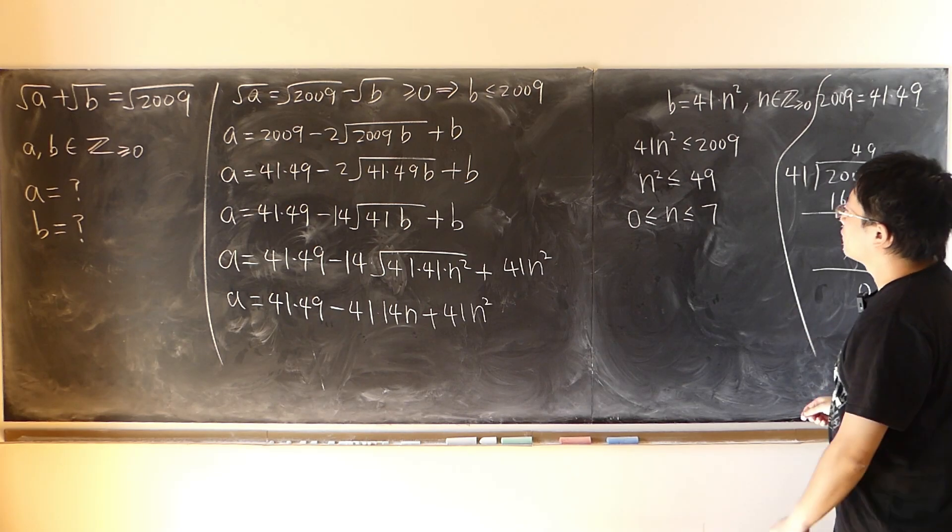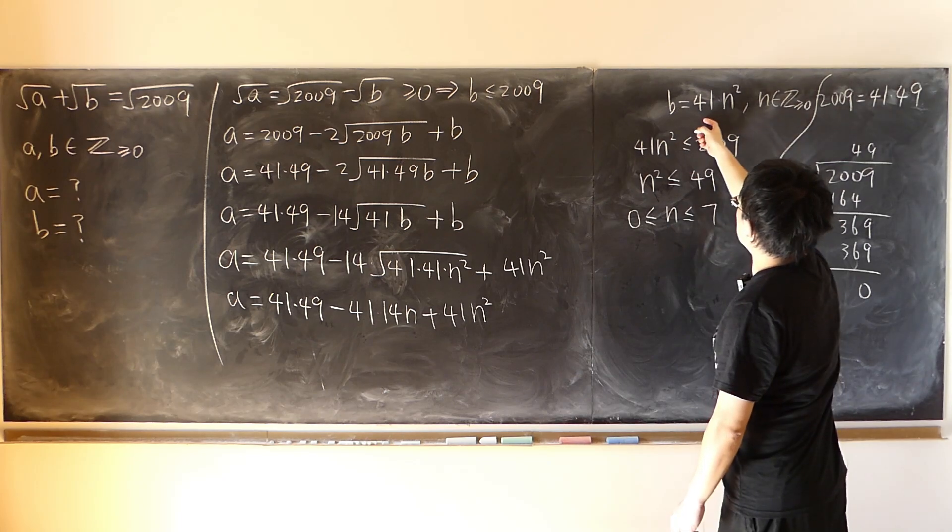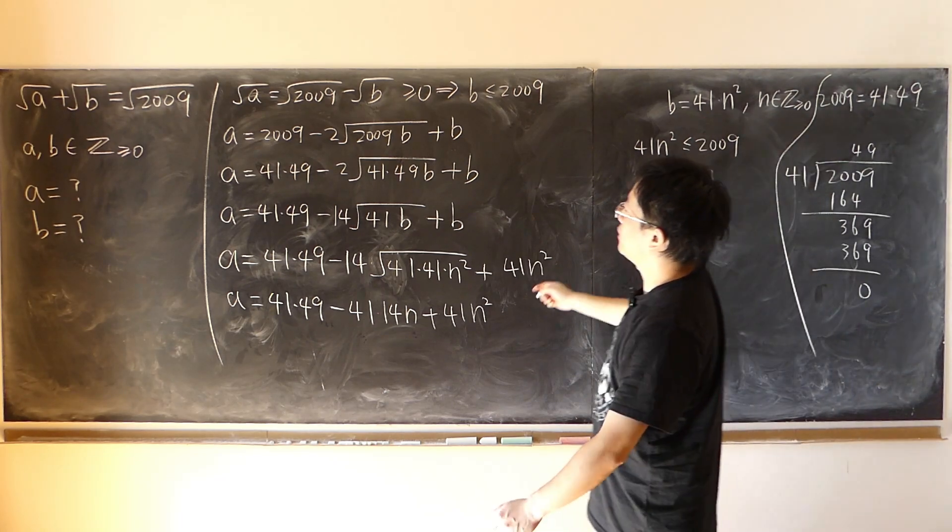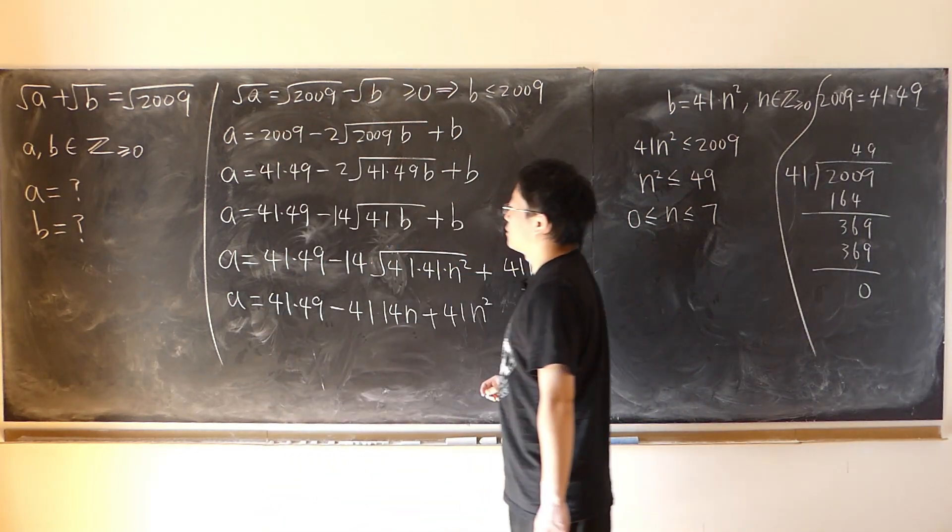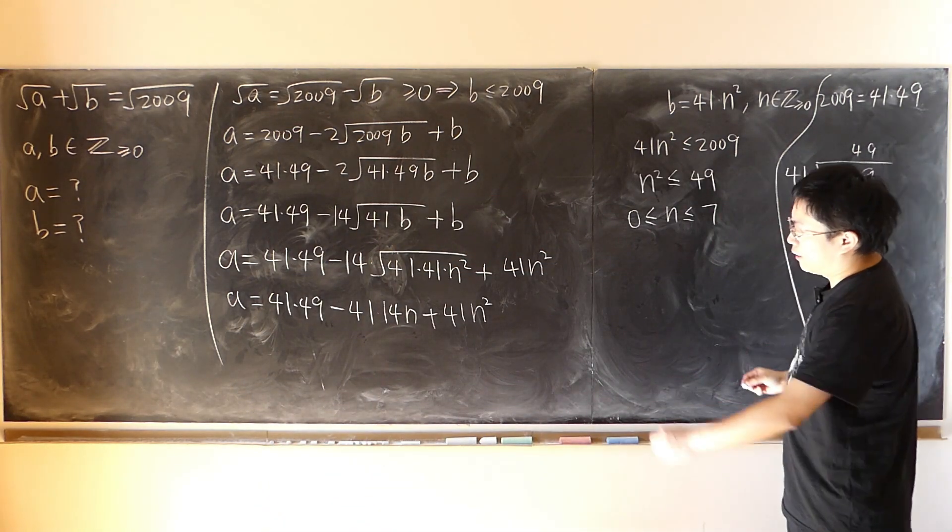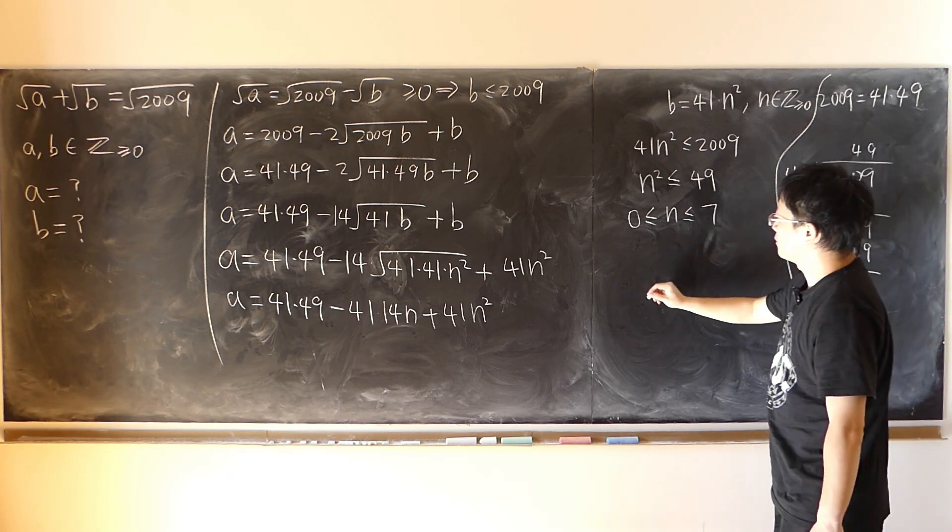So if n is equal to 0, b is immediately 0. If b is 0, then a is just 2009. So that way, immediately, we have eight different solutions. Eight sets of solutions.